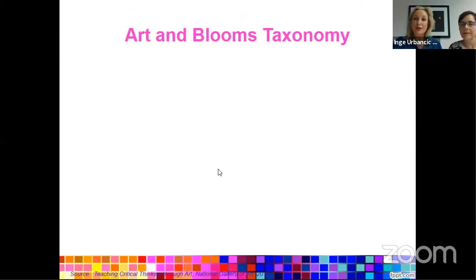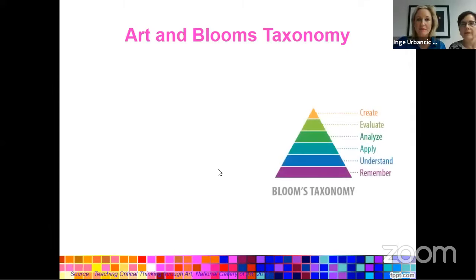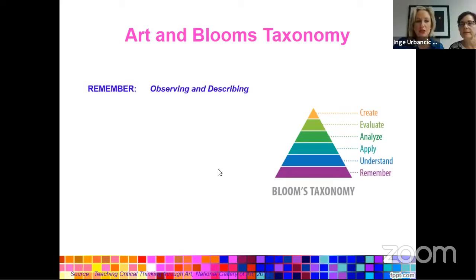Today we are specifically going to talk about how we can practically use art in the classroom to develop critical thinking skills. Relating art to those six stages of Bloom's Taxonomy: if you imagine a painting or picture you're showing students, at the first remember stage, you're just having students observe and describe. What do they see? Basic facts. Nothing complex — just what they're observing and remembering at that point.